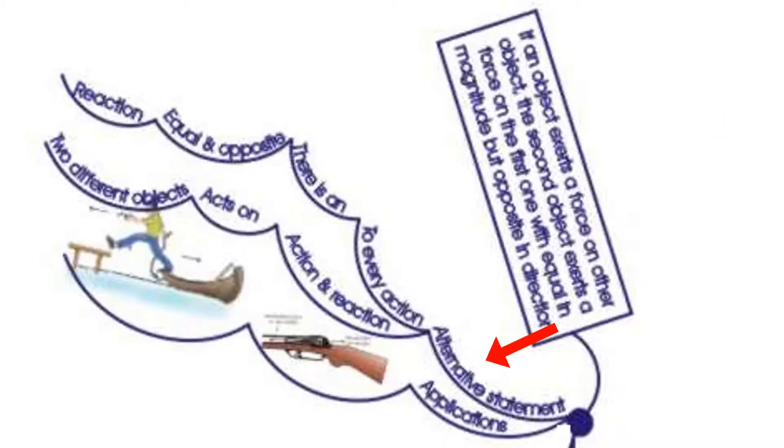The alternative statement of third law of motion is to every action there is an equal and opposite reaction, and it must be remembered that the action and reaction always acts on two different objects. Applications of Newton's third law is shown in the respective figures.